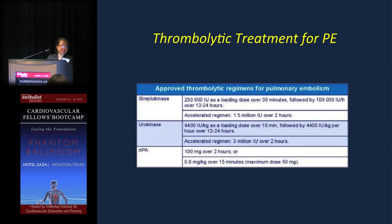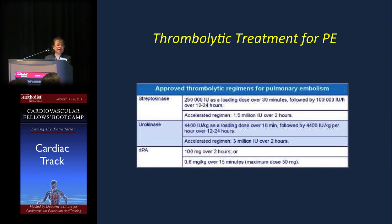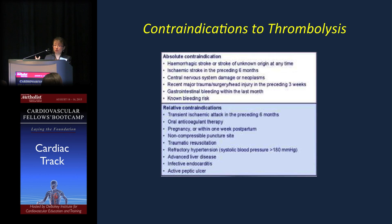Thrombolytic treatment — these are the systemic thrombolytics used for PE: streptokinase, urokinase, and rt-PA, with doses listed. This is not used very commonly and is somewhat regional and center-dependent. It is reserved for patients presenting with acute PE who are hypotensive and whose clot burden is rapidly causing hemodynamic deterioration. Contraindications to thrombolysis include any recent head trauma, TIA, or stroke, and any bleeding diathesis. The 2014 European Heart Journal guidelines are a great resource for the latest information on this.